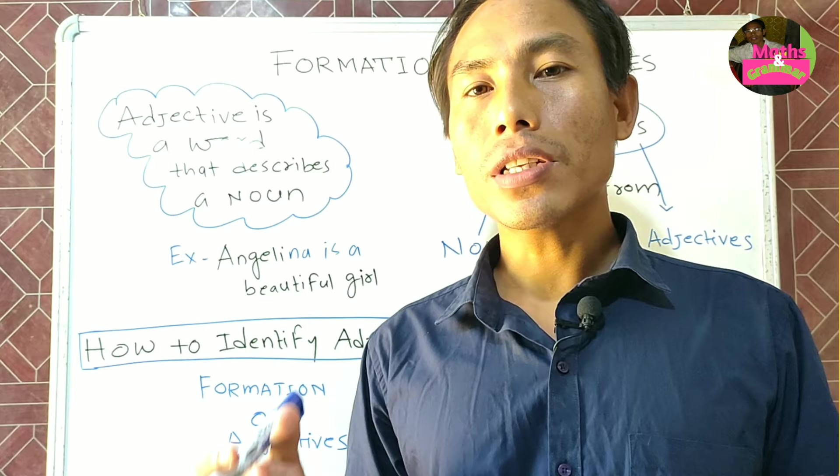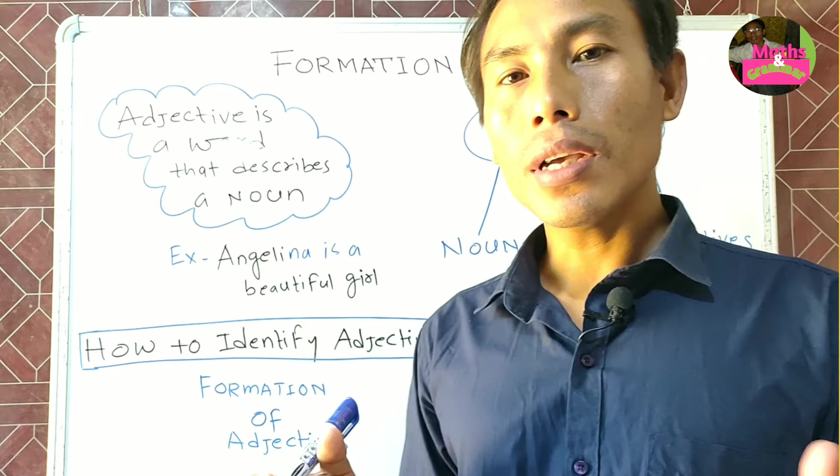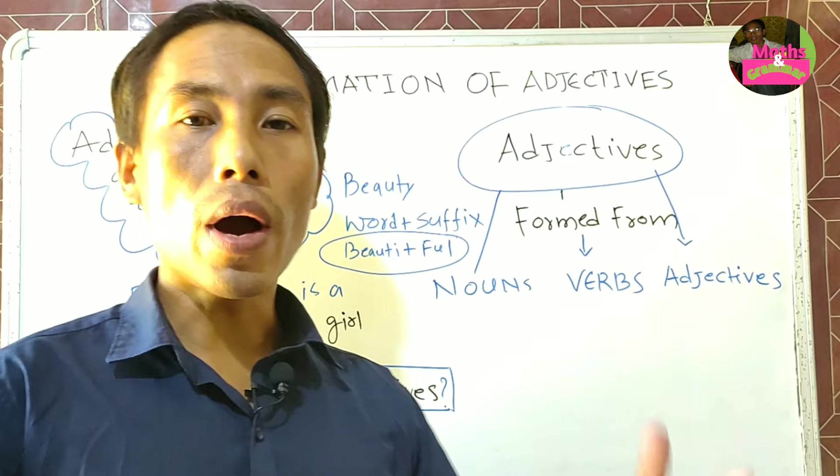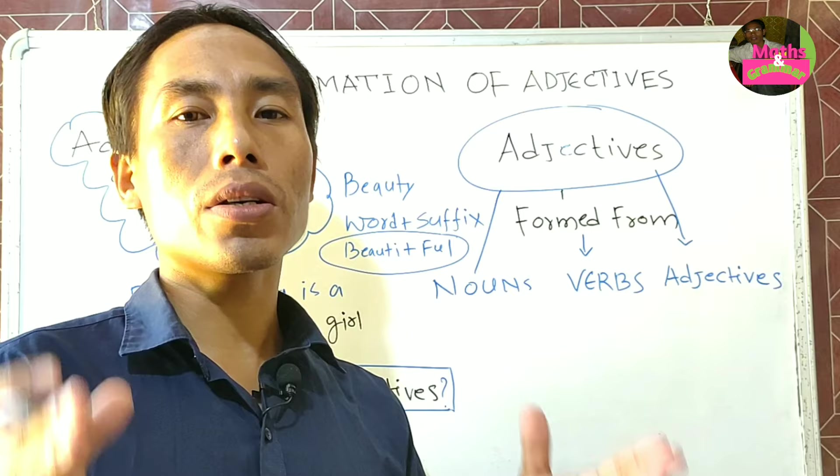Most often students find it difficult in recognizing the adjective word in sentences. It is because adjectives come from different sources — adjectives are formed from different words like nouns, verbs, or adjectives itself. One thing has to be clear in your mind: there is no clear-cut rule for forming adjectives in the English language.